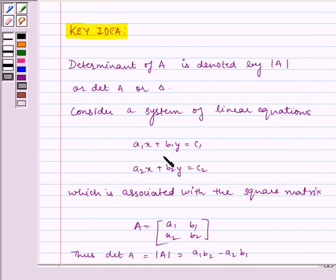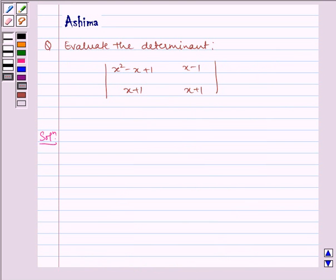a₁x + b₁y = c₁ and a₂x + b₂y = c₂, which is associated with the square matrix A = [a₁, b₁; a₂, b₂]. The determinant of A is |A| = a₁b₂ - a₂b₁. Now let us write the solution.